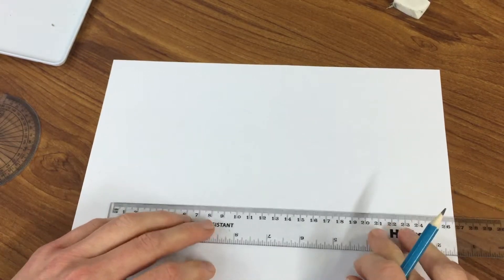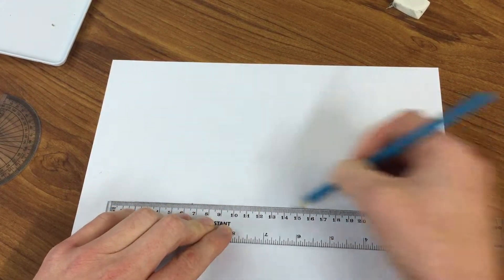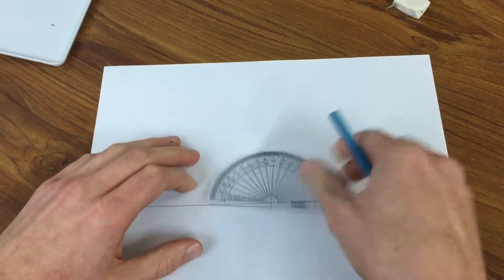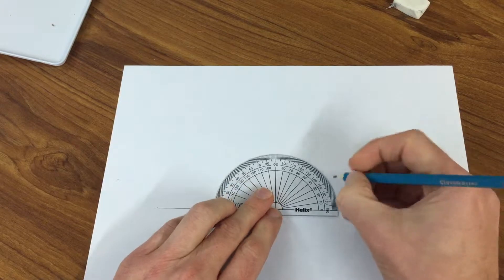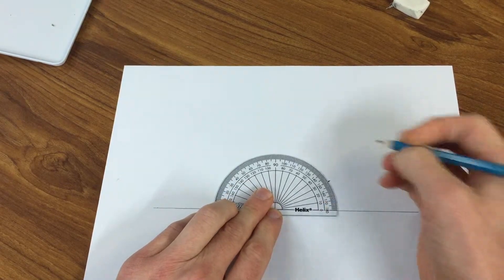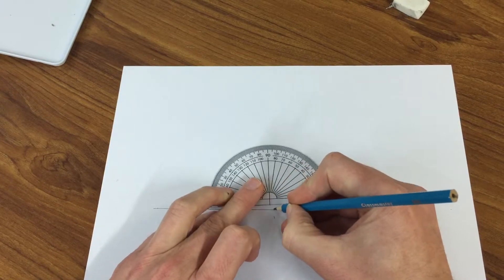The first step is to draw a horizontal line across the page. I'm going to do it a bit more heavily so you can see. After that, take a protractor and roughly in the center you're going to mark out a 30 degree angle one side and the other, and also make sure you mark where the center of that is.